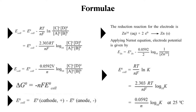We need to understand E-naught-cell: the standard cell potential equals E-naught-cathode minus E-naught-anode. For electrode potential — taking zinc as an example — E-zinc equals E-naught-zinc minus 0.0592 upon 2, log base 10 of 1 upon Zn2+, because 2 electrons are exchanged. We always write the reduction reaction.